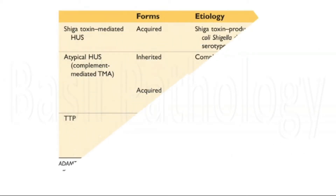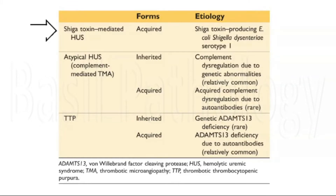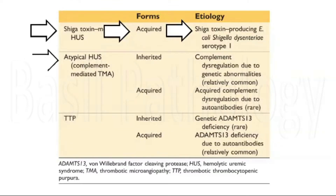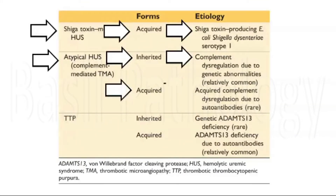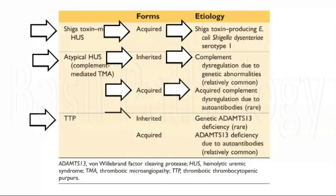Coming to the primary forms in detail. Shiga toxin-mediated HUS is usually acquired due to infection by Shiga toxin-producing E. coli or Shigella dysenteriae type 1. Atypical HUS or complement-mediated HUS is both inherited and acquired. Inherited atypical HUS is due to genetic abnormalities in the complement regulatory pathway. Acquired atypical HUS is due to acquired autoantibodies, which is very rare.